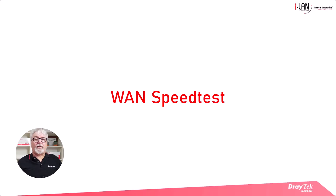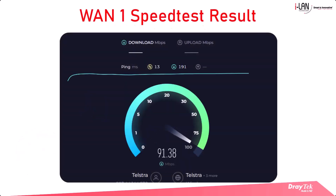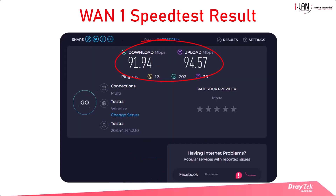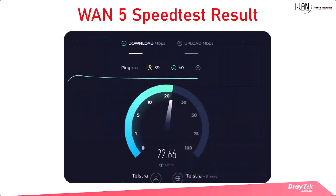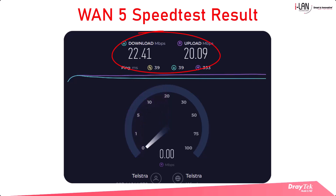Before we dive into the configuration steps, I'll demonstrate WAN aggregation using two connections from different service providers. WAN 1 is connected via an Ethernet connection. WAN 5 is connected via 5G. Let's start by testing WAN 1 on its own — 91.94 megabits per second download, 94.57 megabits per second upload. Now for WAN 5, the 5G connection — we get 22.41 megabits per second download and 20.09 megabits per second upload.